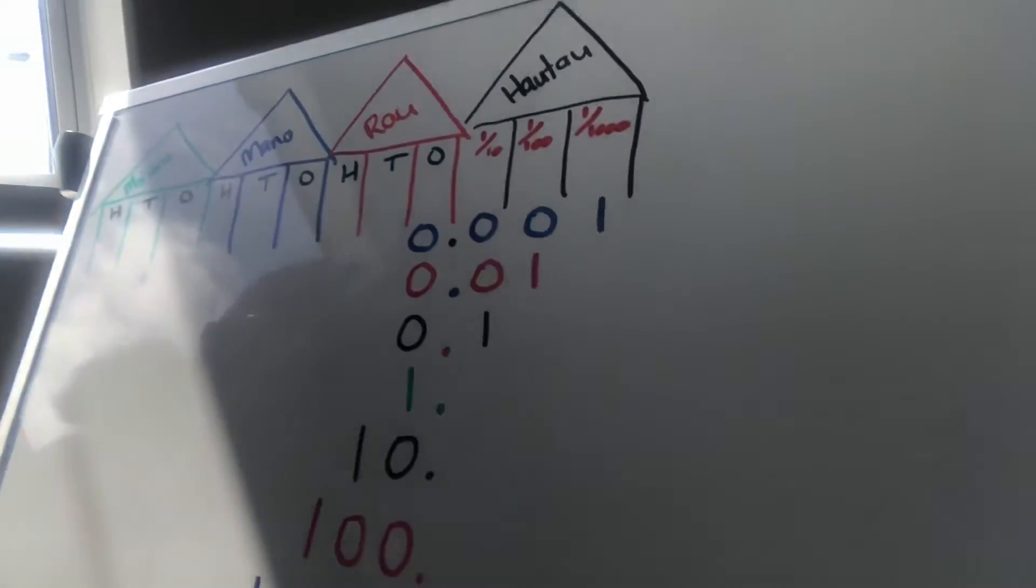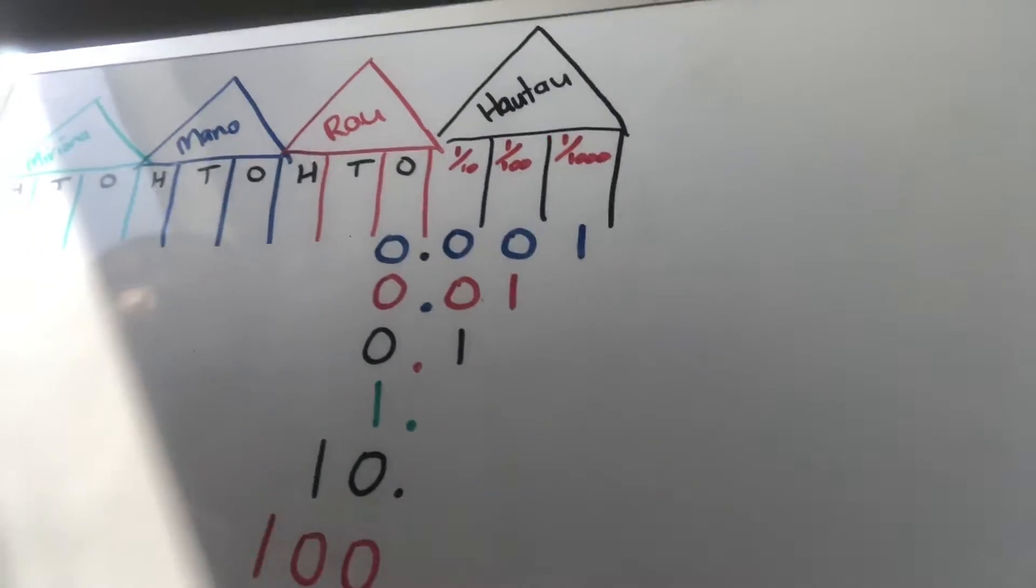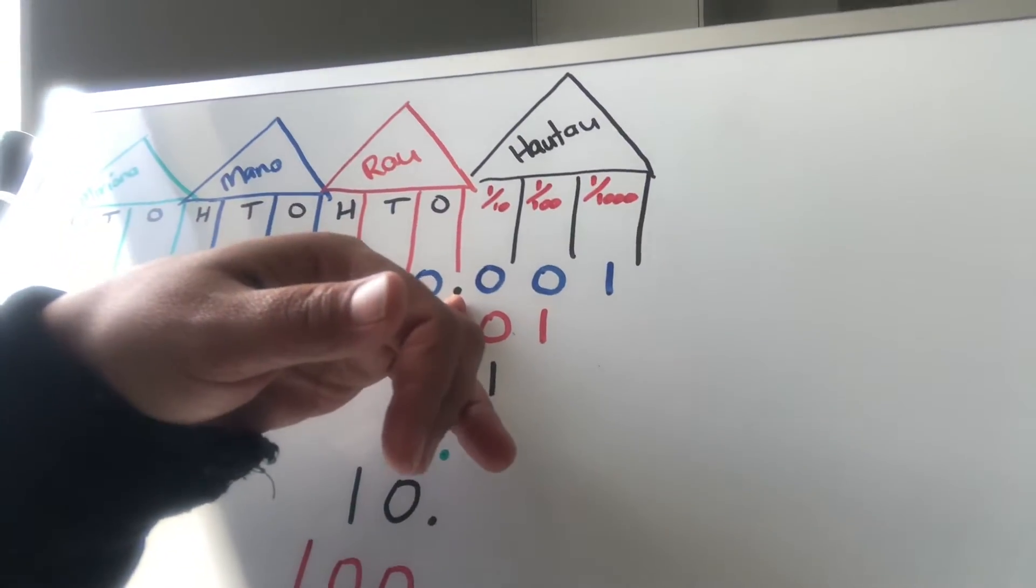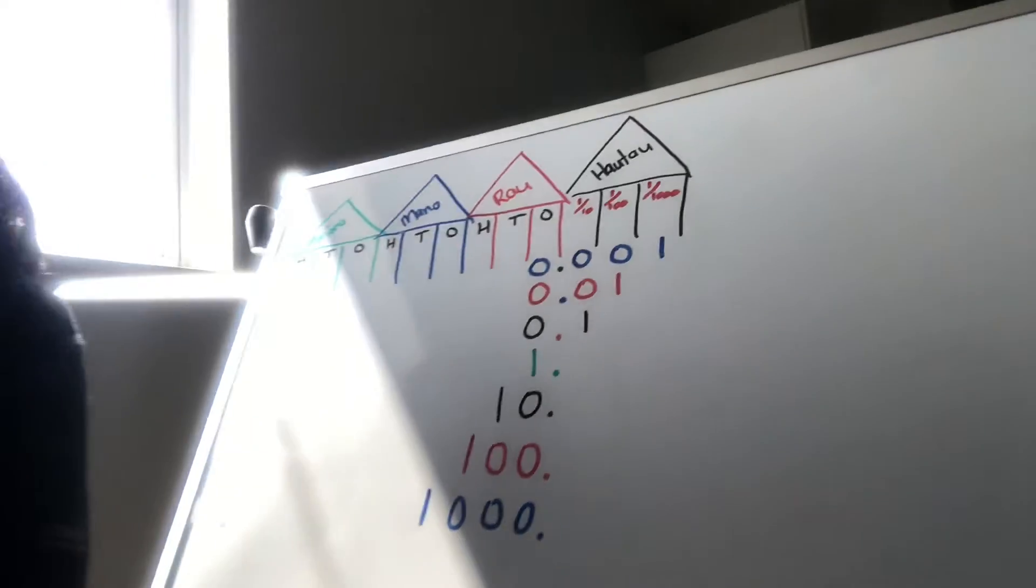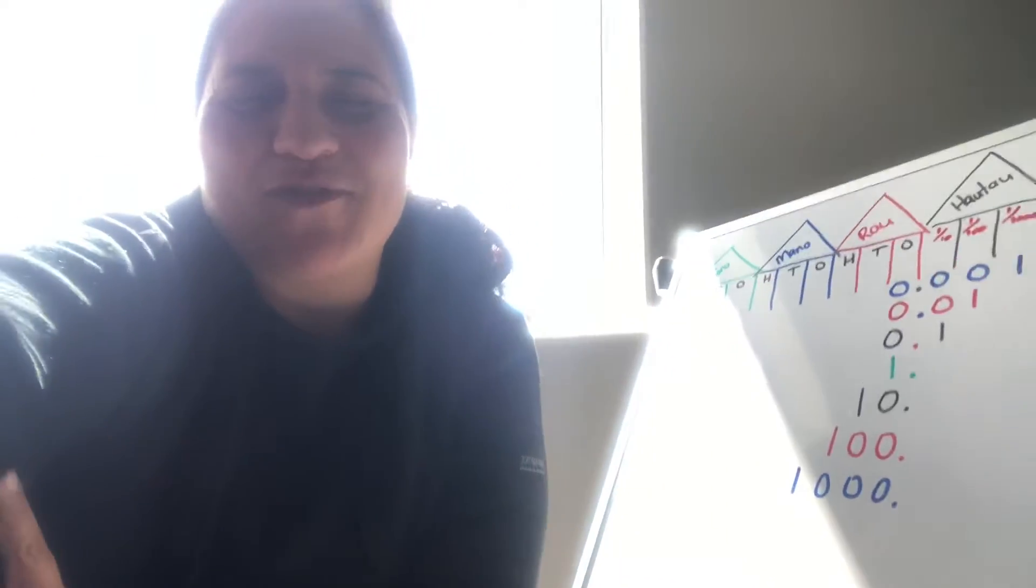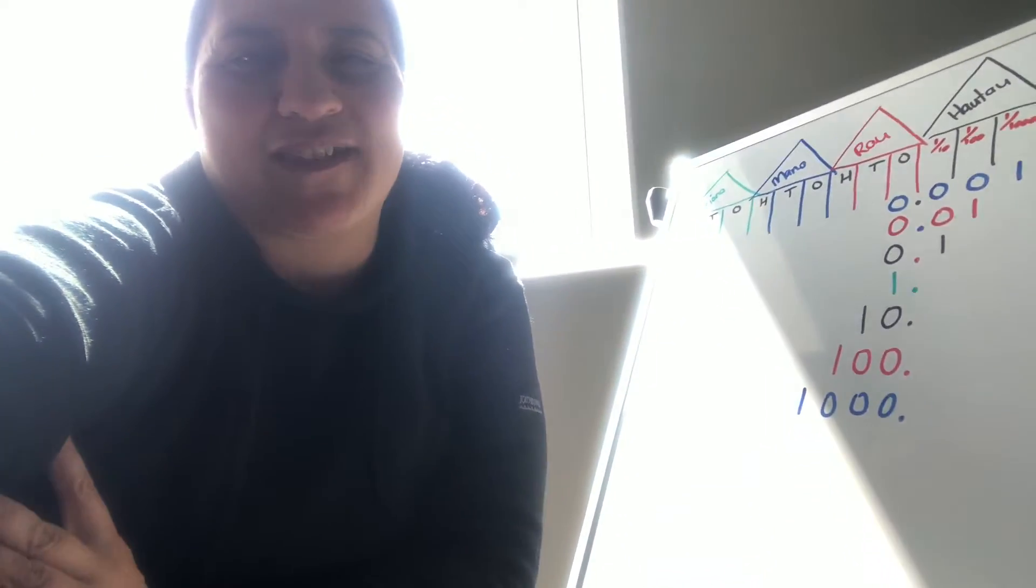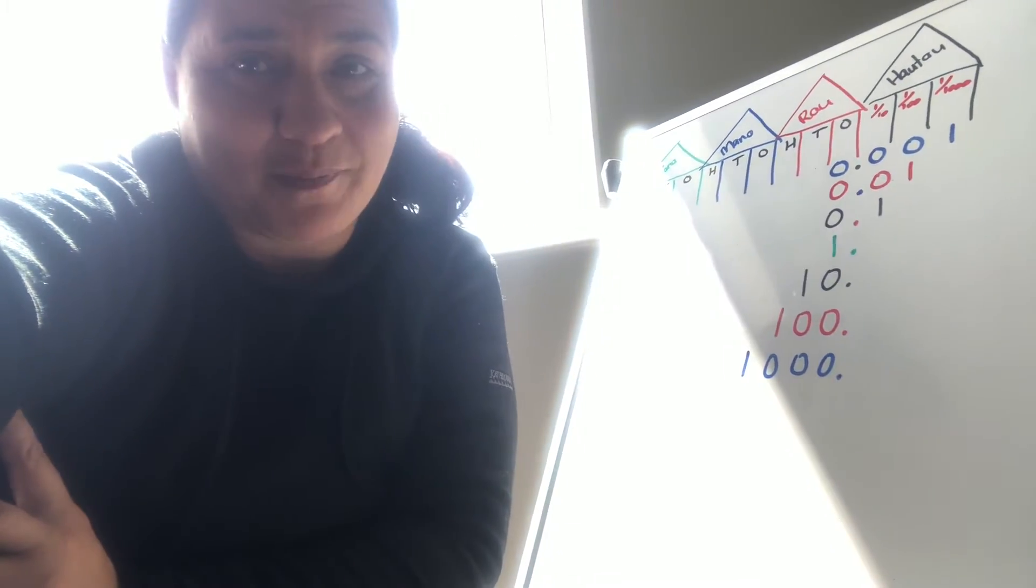And we have been talking about fractions, place value, and i nāenei, if we're looking at our fractions whare, we see the decimal point there which has been mentioned in other videos. So me mōhiotātou, a decimal is used to write a number that is not a whole number.